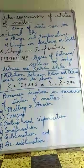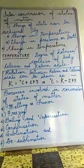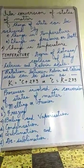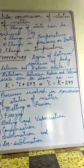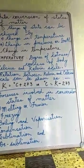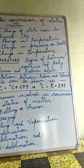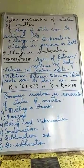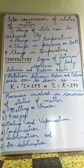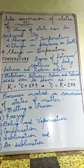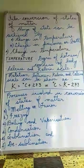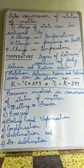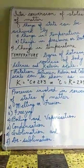The reverse of sublimation is desublimation, in which gases or vapors convert directly into a solid state without passing through the liquid state. Ammonium chloride, iodine, camphor, naphthalene, solid carbon dioxide, etc. are good examples which show sublimation and desublimation respectively, and are examples of substances that sublime.